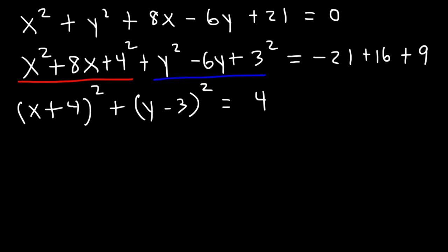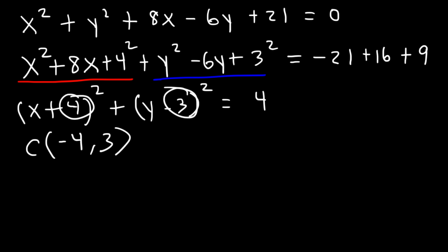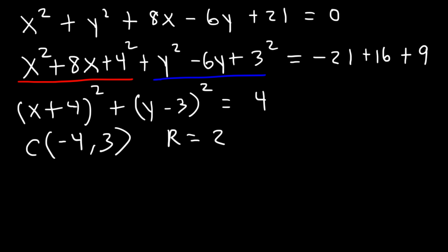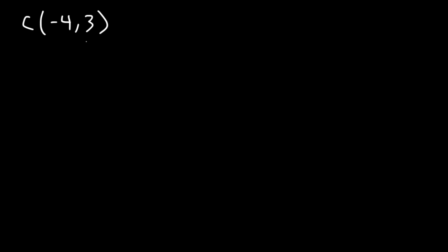Now that we have the equation in standard form, we need to find the center and the radius. The center is going to be (negative 4, positive 3) — all you do is change the sign. The radius is the square root of 4, which is 2. Keep in mind, this is r squared. So let's rewrite this information.